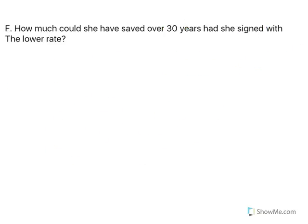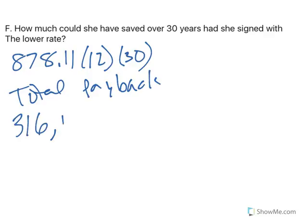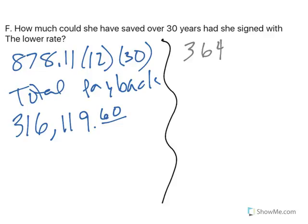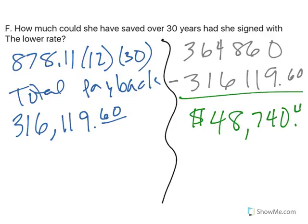How much would she have saved over 30 years with the lower rate? If she was paying $878.11 for 12 months a year for 30 years, her total payback would have been $316,119.60. In the other scenario she paid $364,860, so the difference is $48,740.40. Because it's the same loan term, she'd be paying $150 less every month — that's extra money in your pocket right away. Shop around for interest rates because different banks will give you different rates.